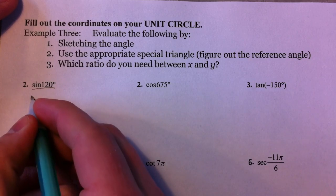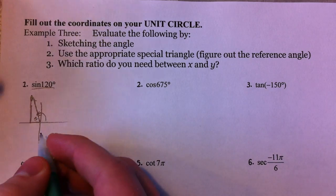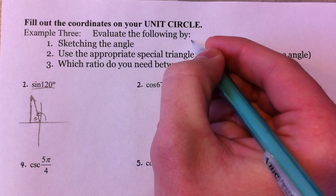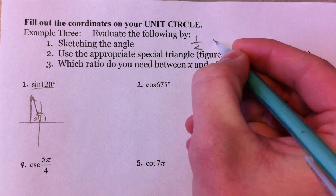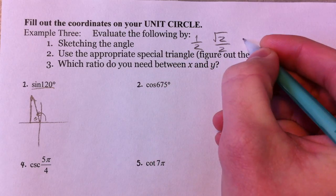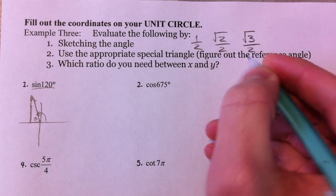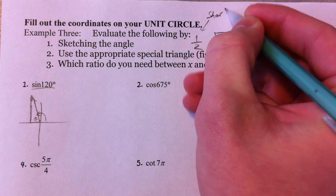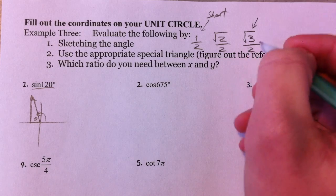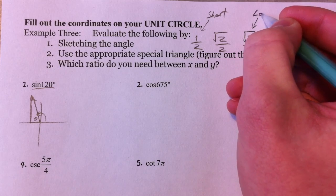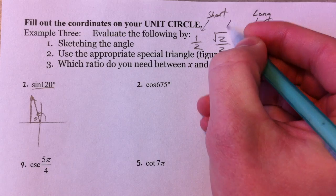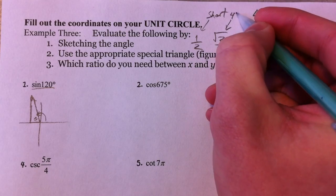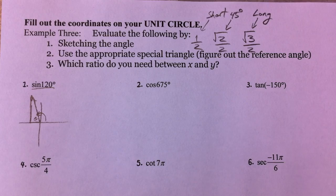Now it's the 30-60-90, and so the short side with the 30-60-90 — remember that you have numbers 1/2, √2/2, and √3/2. We have to know that 1/2 is the shortest it can get, and √3/2 is the long side. The √2/2 is right in the middle, and that's used for the 45-degree angles.